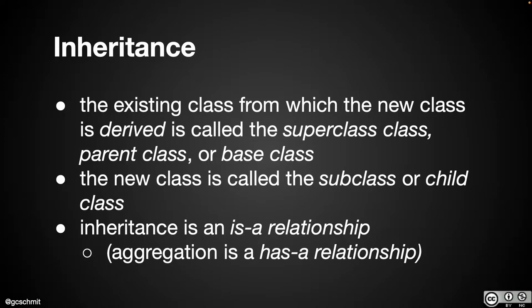Inheritance is a fundamentally different type of relationship than what we've been dealing with so far. Inheritance is what we call an 'is-a' relationship — a Picture is a SimplePicture. Everything else we've done this year has been a 'has-a' relationship: a Picture has a 2D array of pixels, a Pixel has a color, a Turtle has a pen color, a Turtle has an x and y location. Those are all has-a relationships.